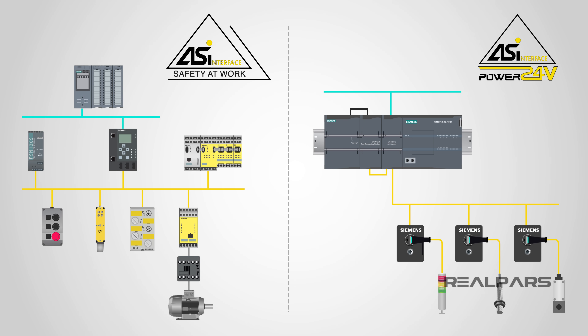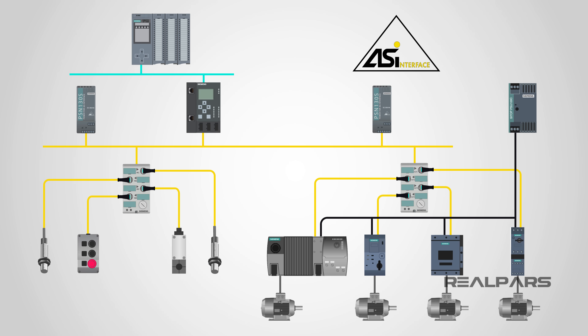Finally, we mentioned ASI Safe and ASI Power 24 volts. So all in all, the AS Interface is simple and versatile. Getting the setup of the AS Interface configuration correct is also extremely simple — all that is required is that the AS Interface master be configured with the ID of each node device, and then the master sorts all of the parameters and everything else out.